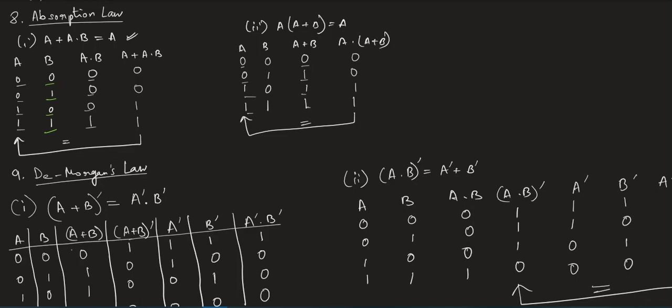Now if we add A with A into B — A plus A·B — we get: 0+0=0, 0+0=0, 1+0=1, and 1+1=1. You can see that the values under A plus A·B are 0, 0, 1, 1, which is the same as A. That is why A plus A into B is equal to A.